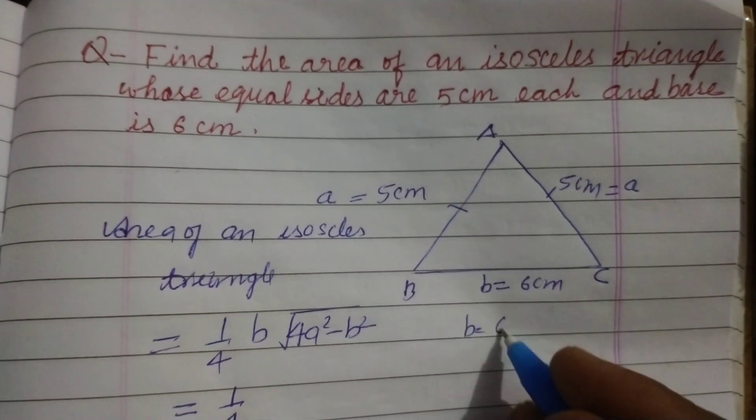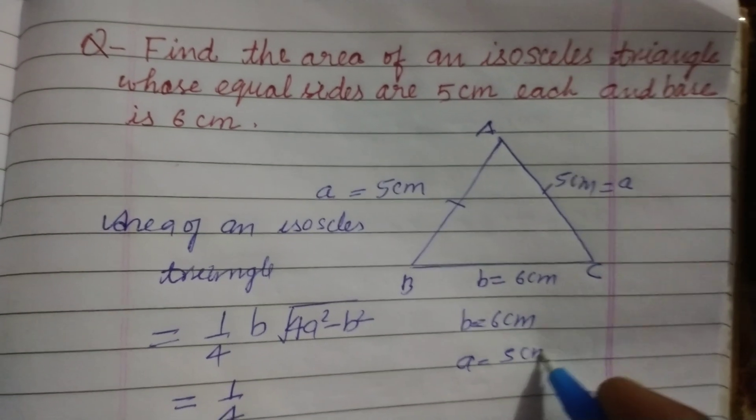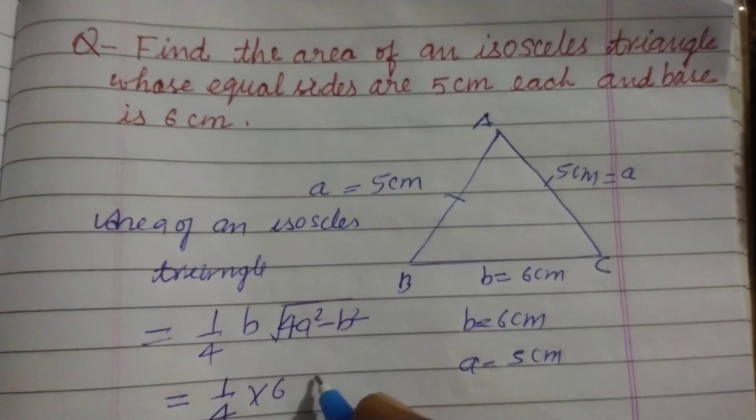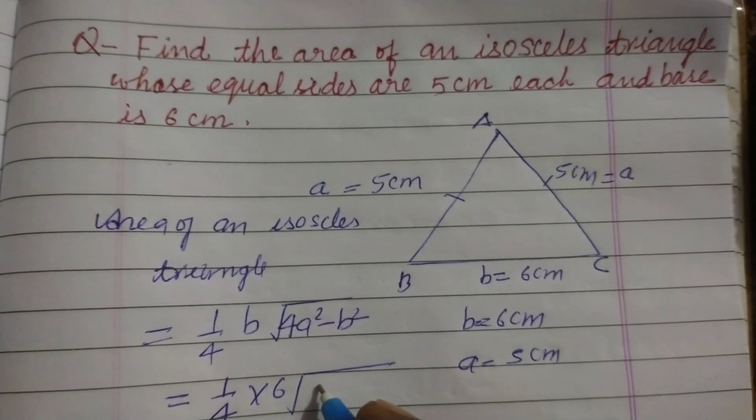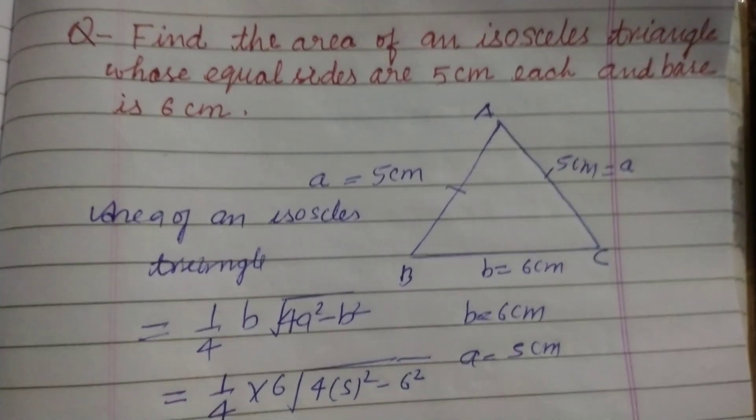B is here 6 cm and A is 5 cm. So we put the values: 6, 4 times 5² minus 6².